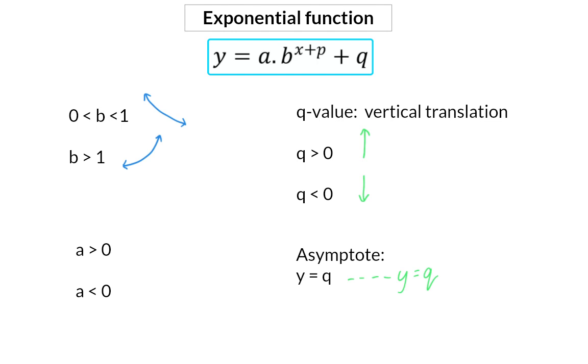Lastly, the sign of the a value indicates whether there was a reflection around the x-axis or not. If a is bigger than 0, there was no reflection, and the function will lie above its asymptote. If the a value is negative, a reflection has taken place, and the function will now be below its asymptote.